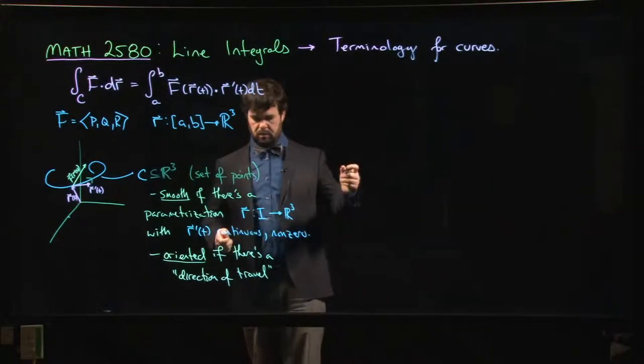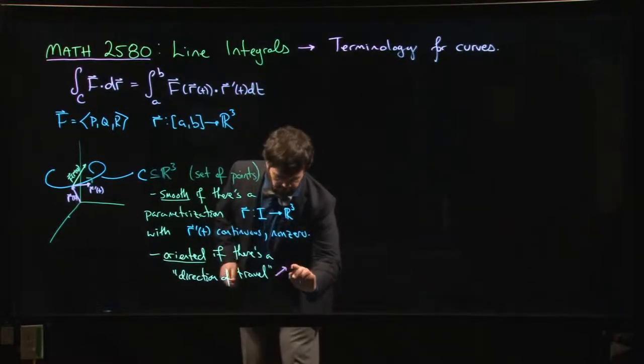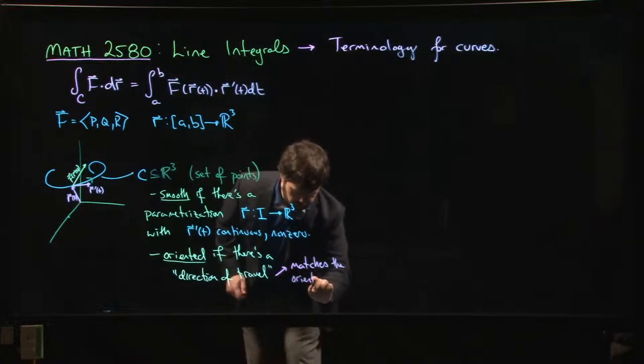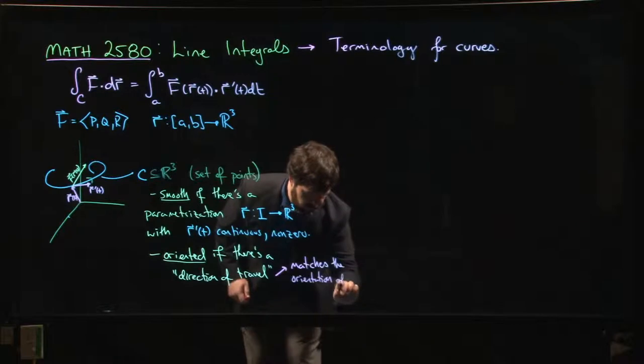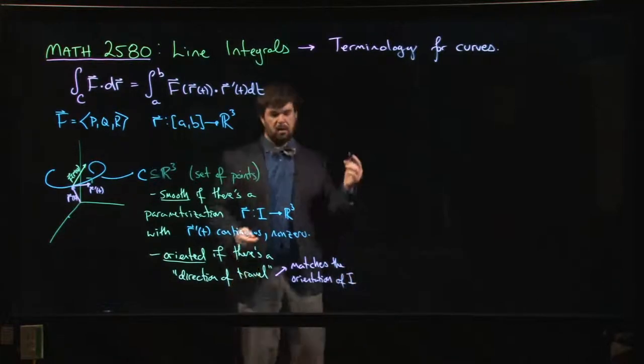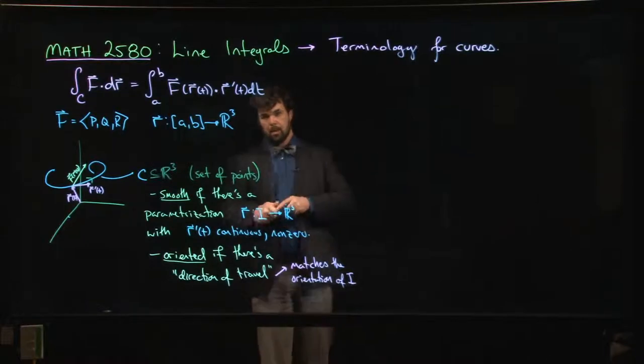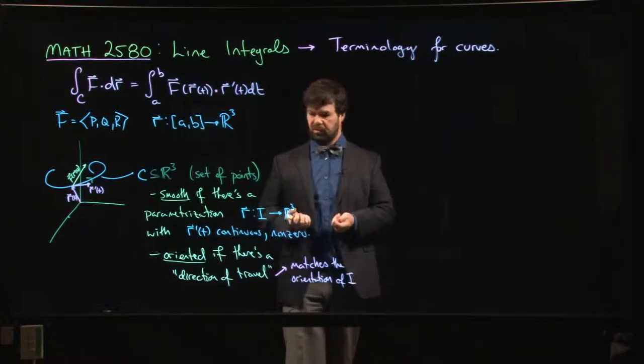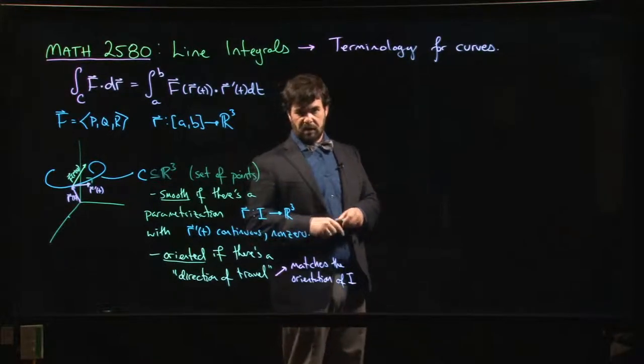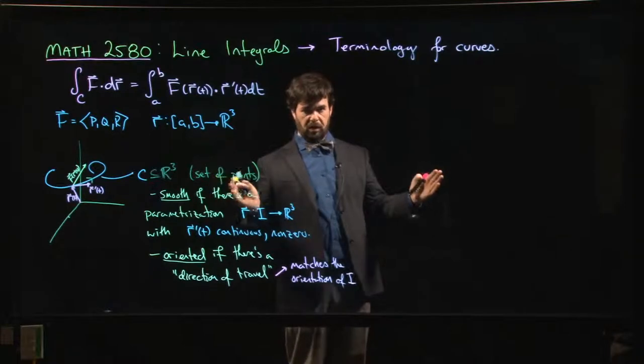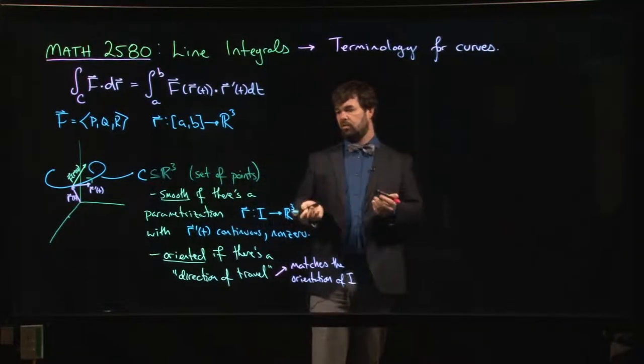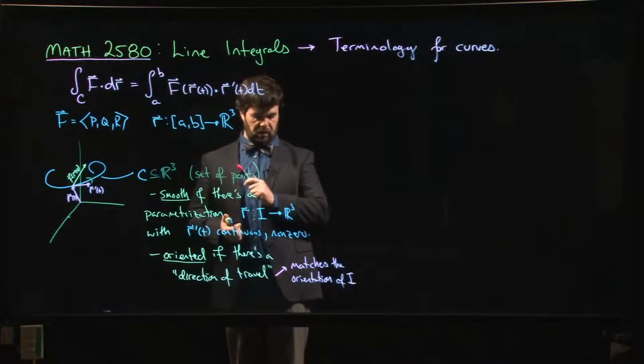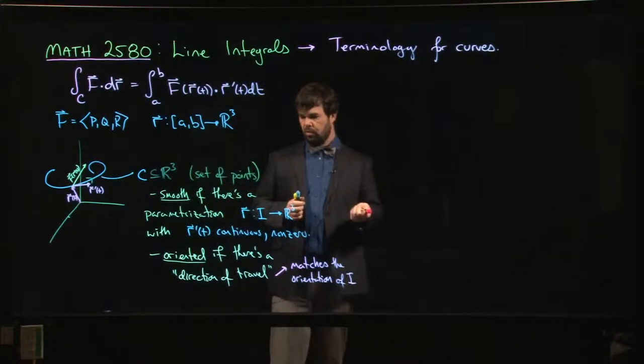So you can talk about orientation-preserving parametrizations versus orientation-reversing parametrizations, because we know that every interval has a natural parametrization, which is just given by the ordering of the real numbers going from smaller to bigger numbers. So we have this usual ordering for an interval—direction of increasing X. That's fine.